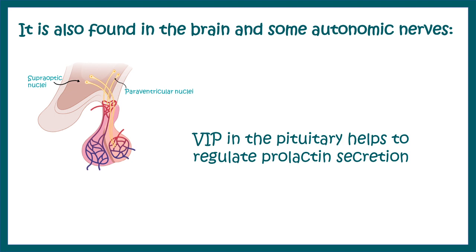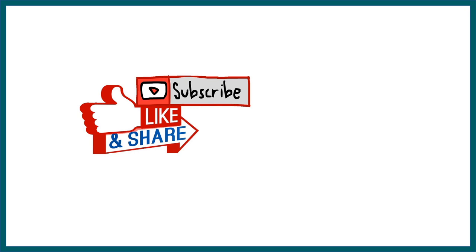VIP has functions on the pituitary gland as well. VIP in the pituitary ultimately helps in prolactin secretion. That summarizes the key points about vasoactive intestinal peptide.